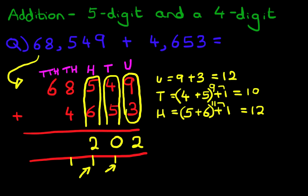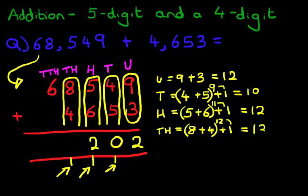Now we're going to add the thousands. And don't forget the 1 here. For the thousands, we have 8 plus 4 plus the 1 we are carrying over. 8 plus 4 is 12 plus the 1 is 13. So let's write that down. 1 and 3 is 13.